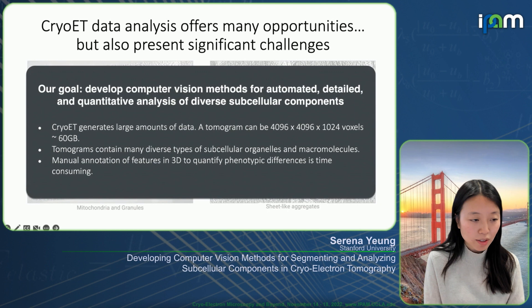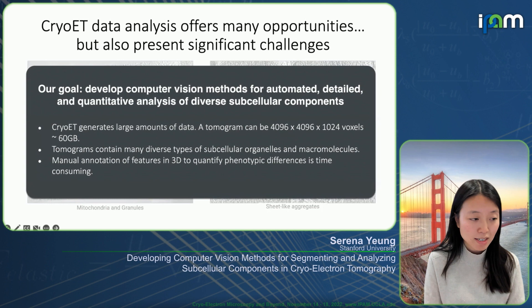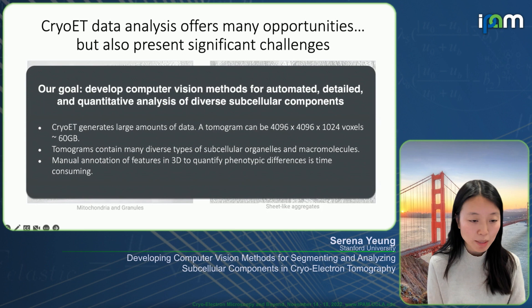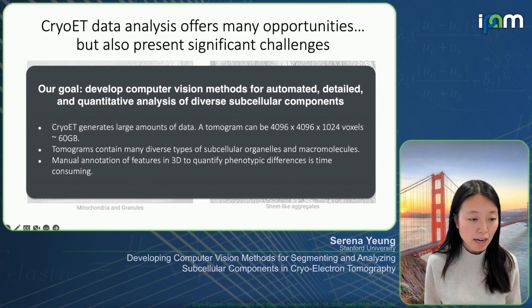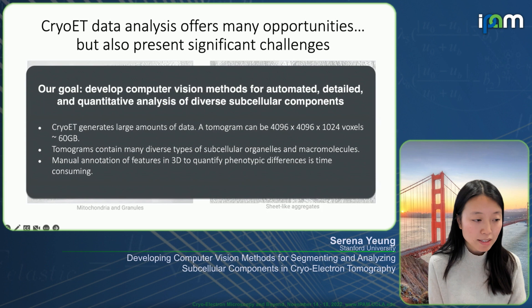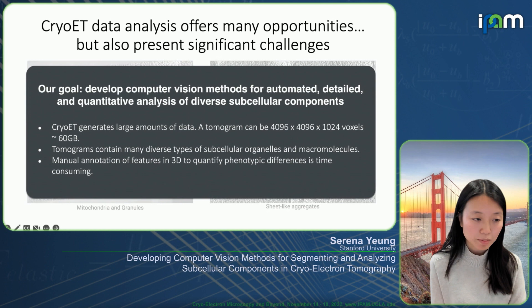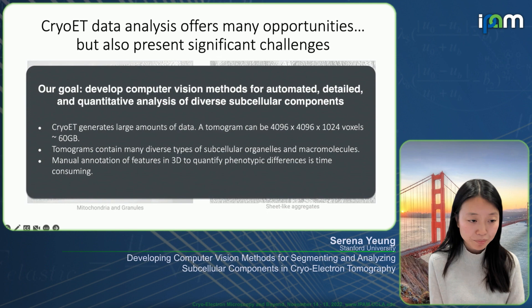Our overarching goal is to develop computer vision methods that can support automated, detailed, and quantitative analysis of diverse subcellular components in cryo-ET data. These cryo-ET tomograms are huge — we generate large amounts of data. Tomograms can each be many thousands of voxels, for example 4,000 by 4,000 by 1,000, each about 60 gigabytes. They contain many diverse types of subcellular organelles and macromolecules, and manual annotation of features in 3D is quite time consuming, making it a rate-limiting step in analysis.